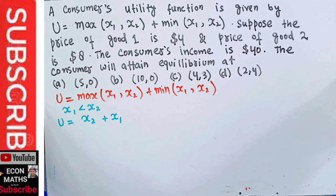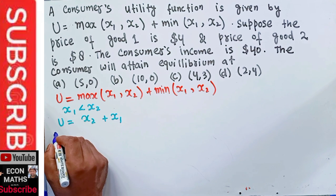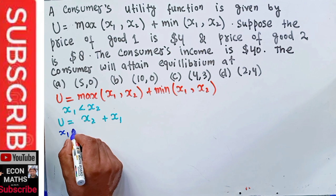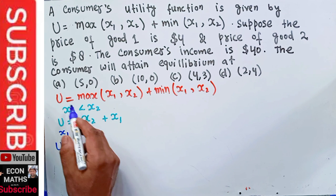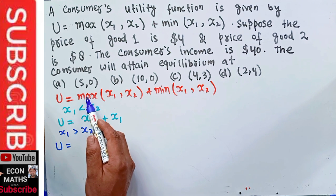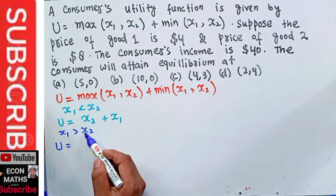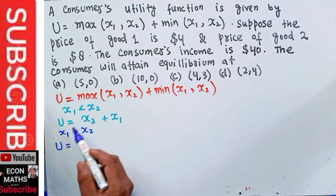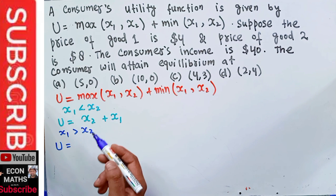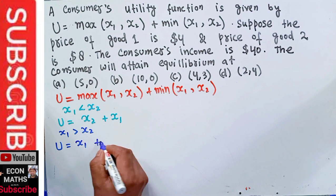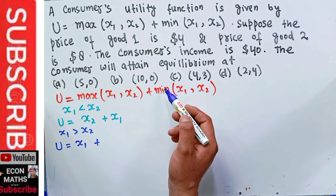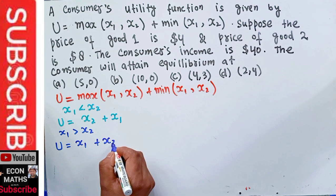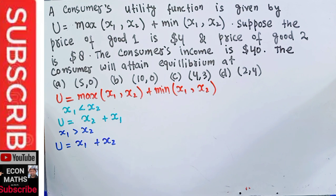Symmetrically, when x1 is greater than x2, max(x1, x2) gives us x1, and min(x1, x2) gives us x2. So again the utility function becomes U = x1 + x2. In both cases, this hybrid utility function simplifies to U = x1 + x2.